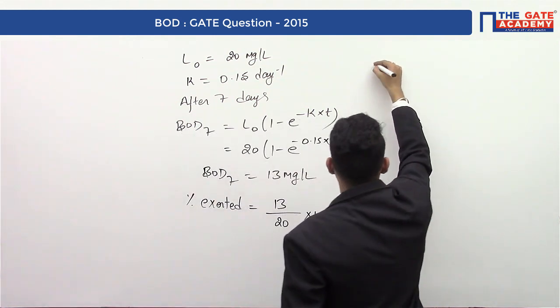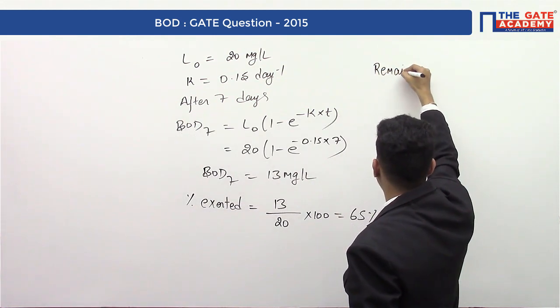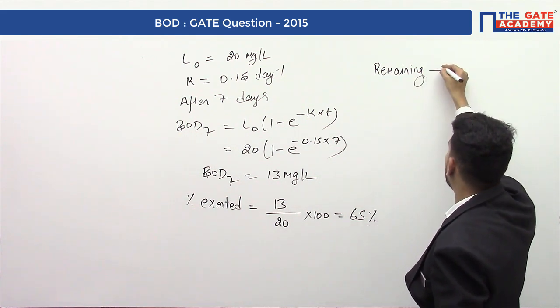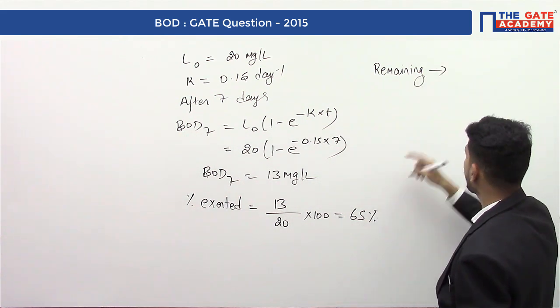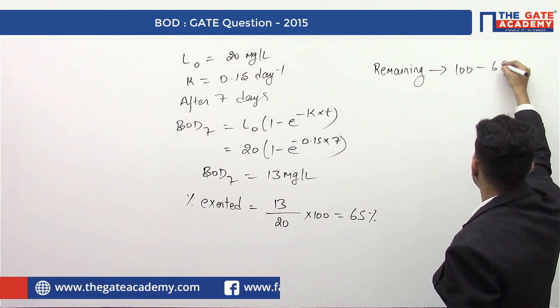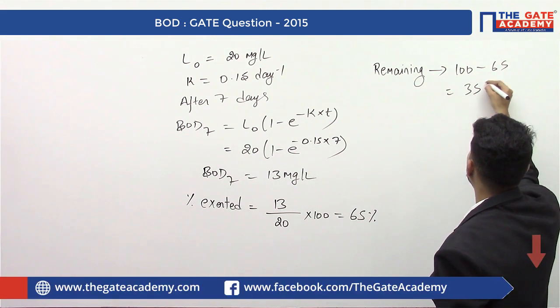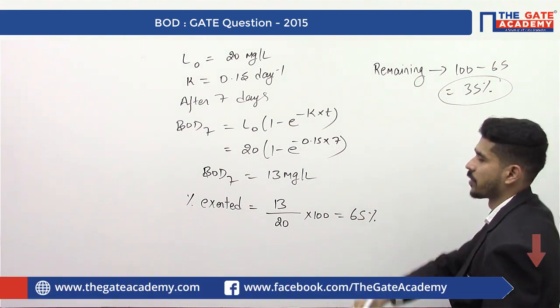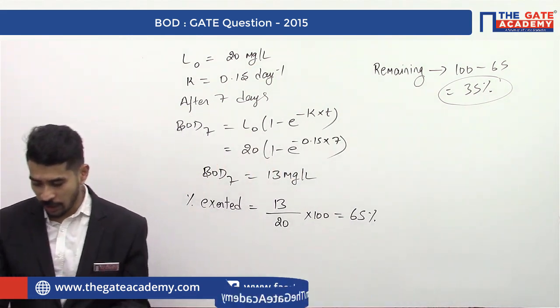BOD satisfied means in the duration of seven days, 65 percent of your BOD is satisfied. And if 65 percent is satisfied, then the remaining is 100 minus 65, which is equal to 35 percent.